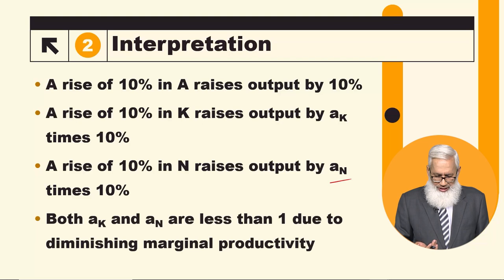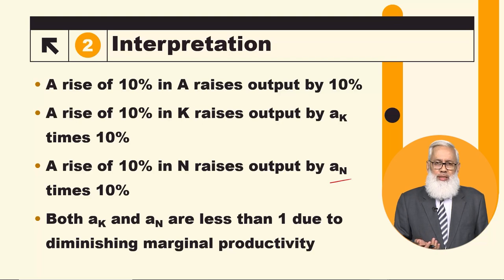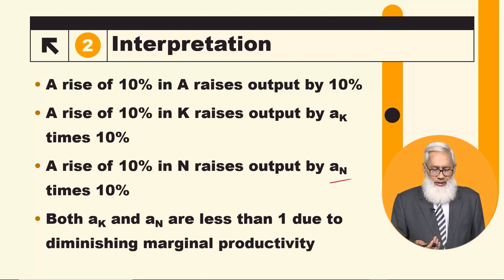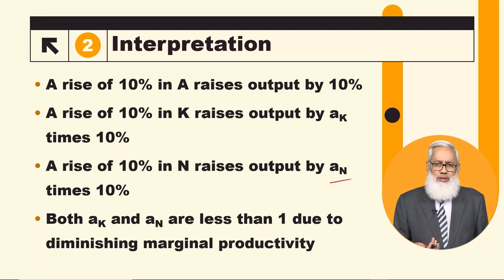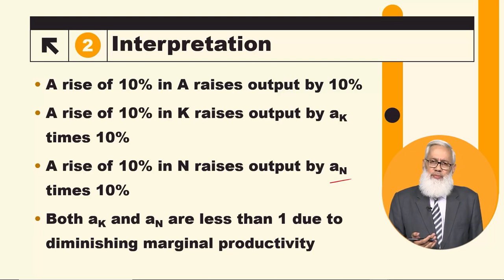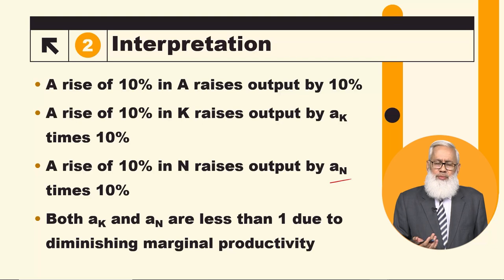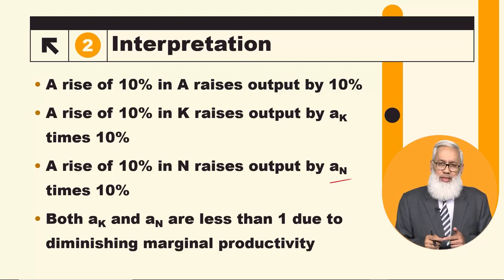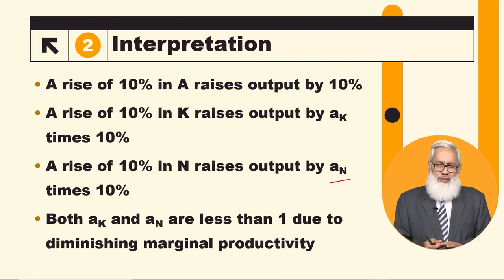These two elasticities are individually less than 1, which means there is diminishing marginal productivity. You are familiar with this concept. And their sum is equal to 1, which means constant returns to scale. If capital or labor increases, the proportional increase in output equals that same proportion — for example, a 5% increase in inputs leads to a 5% increase in output.